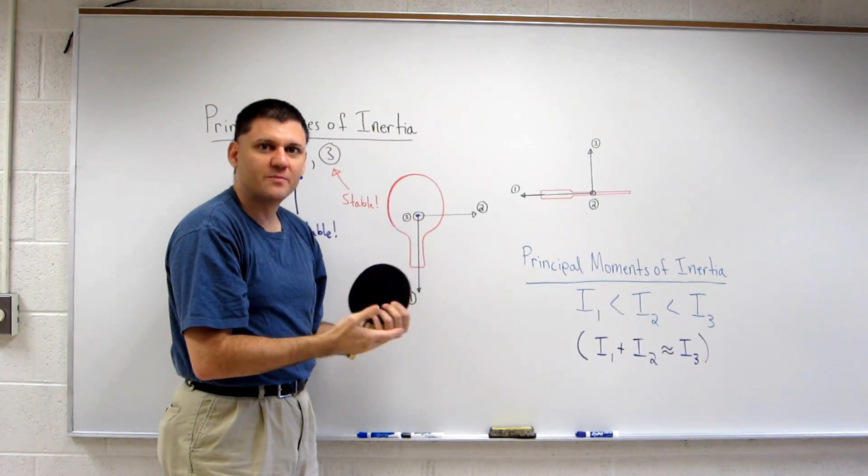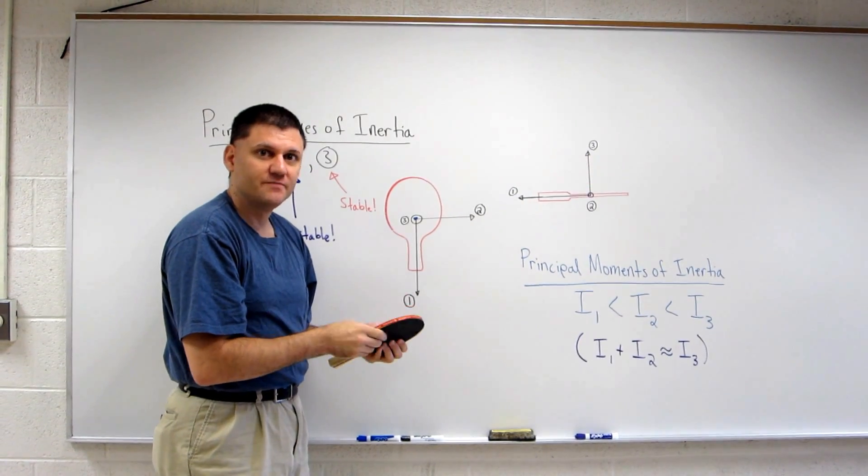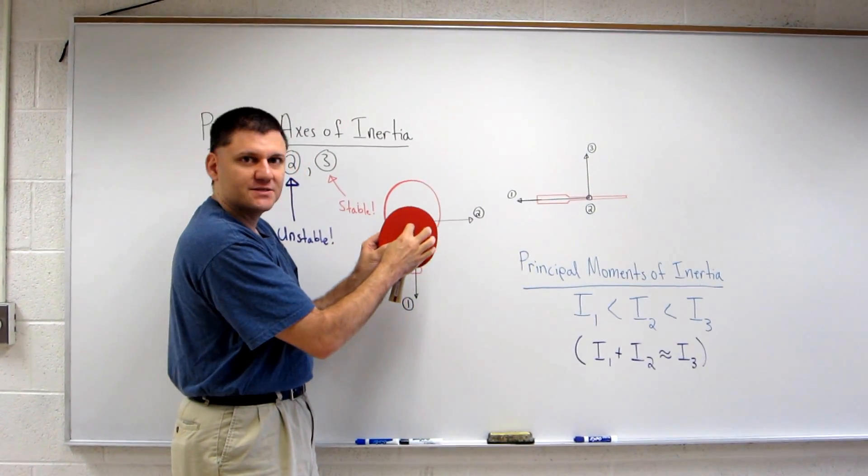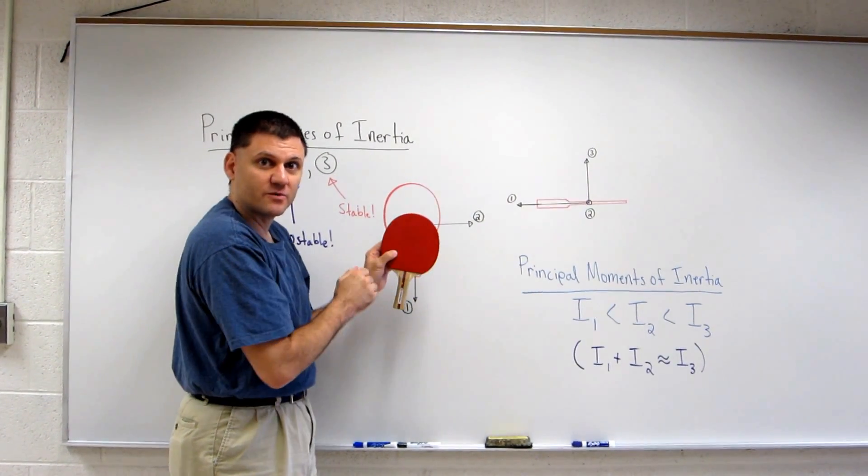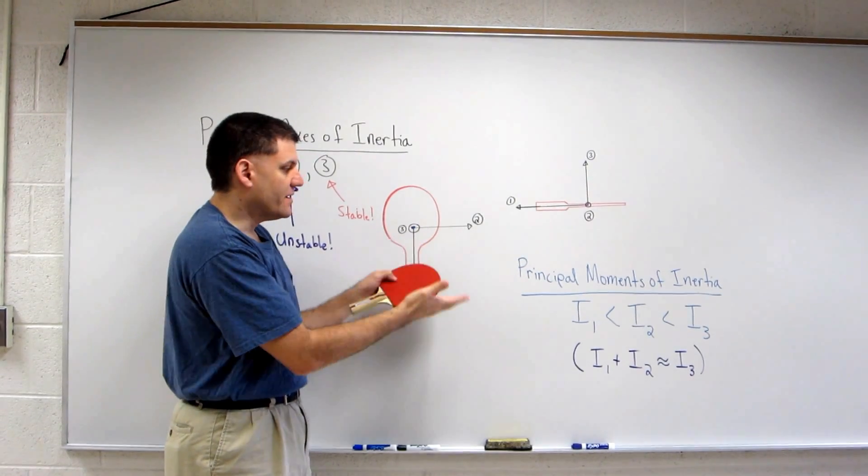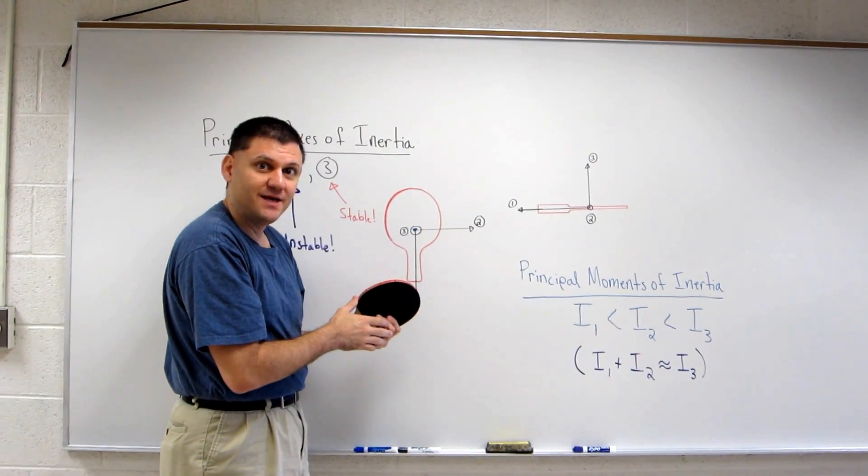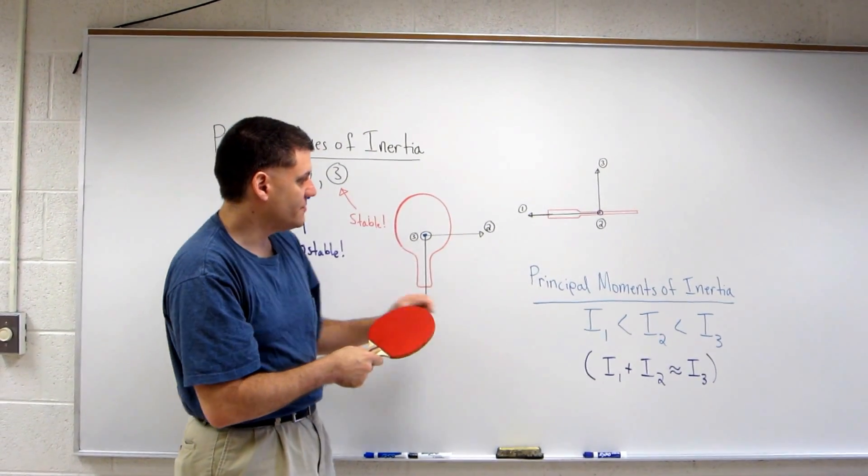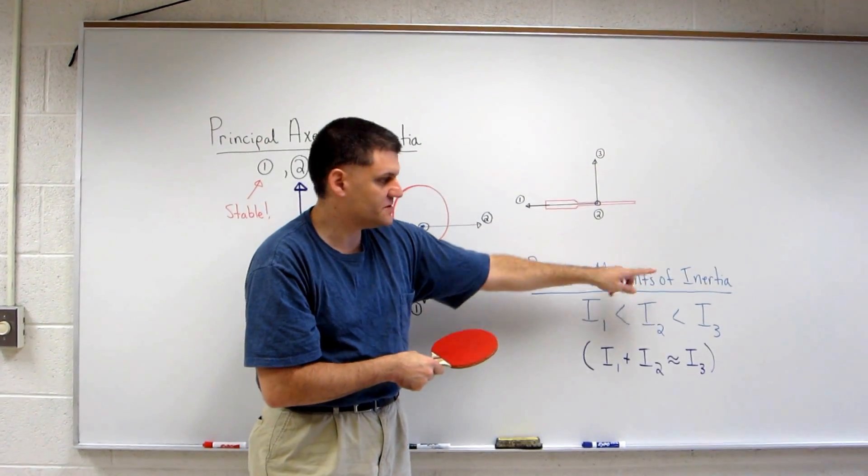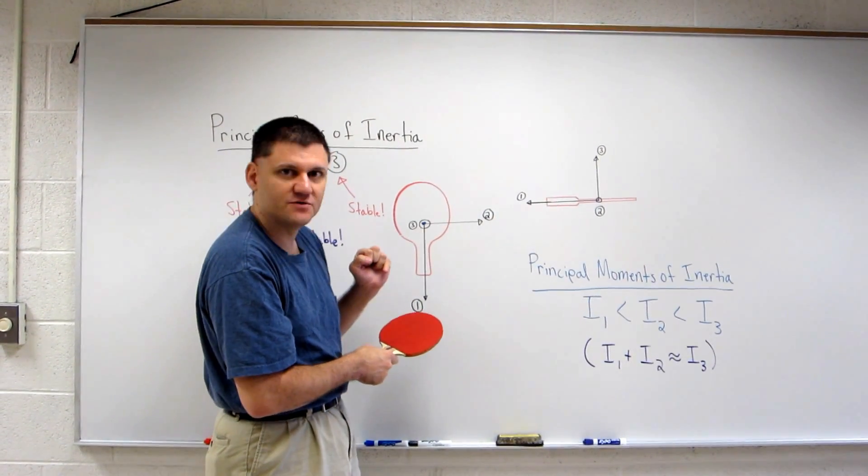Moment of inertia is a property we use for extended objects. It has to do with how the mass is distributed at some distance from a rotation axis. Without going into all the mathematical details, it turns out the moment of inertia, which we call principal moments of inertia for these axes that I've chosen,